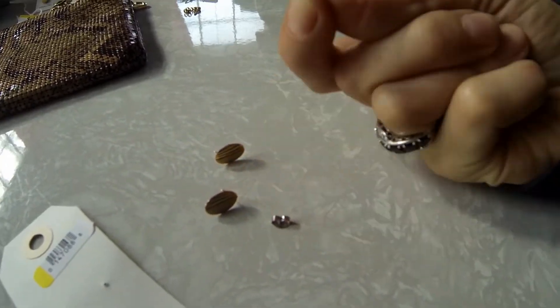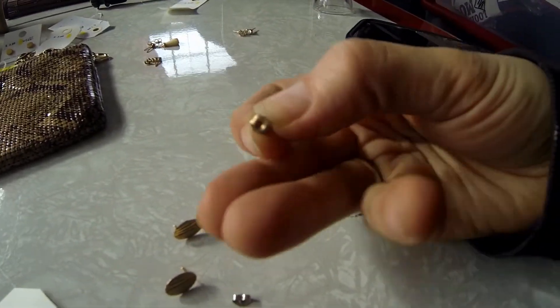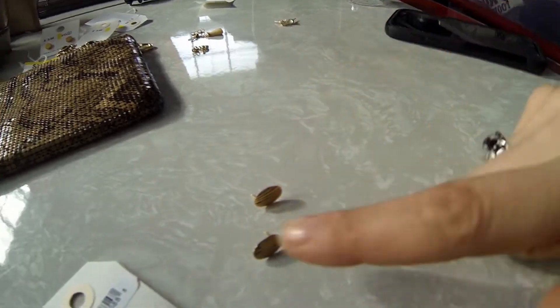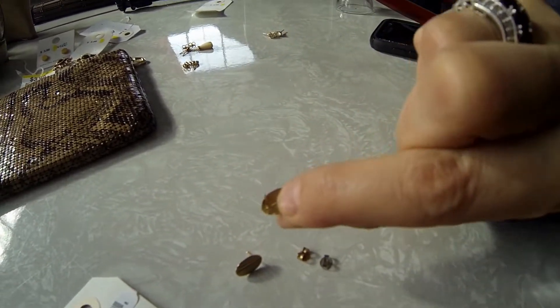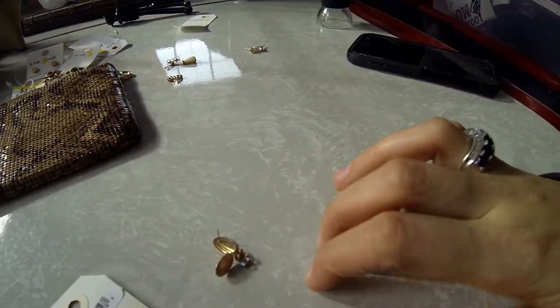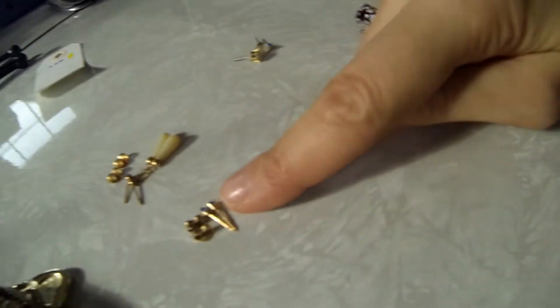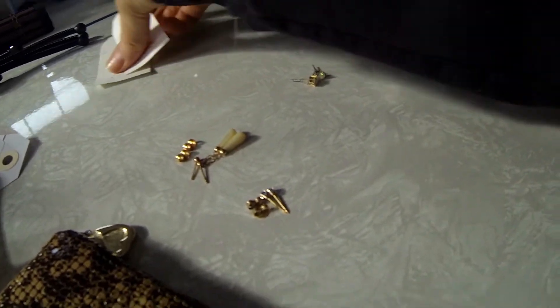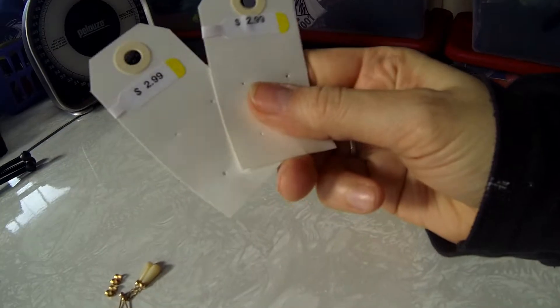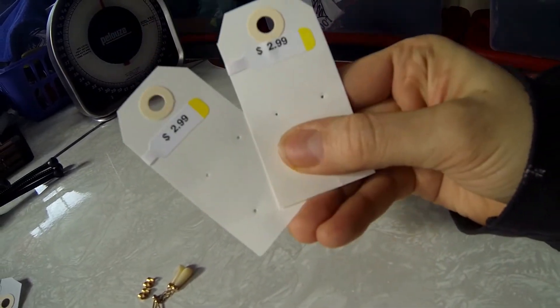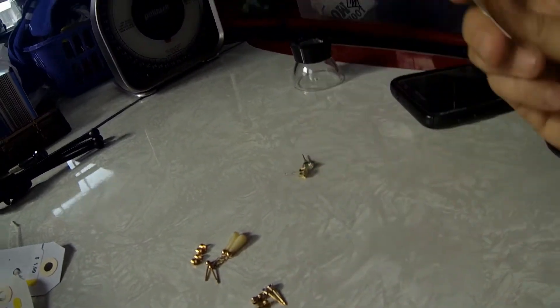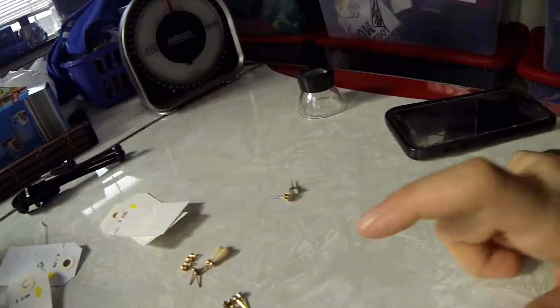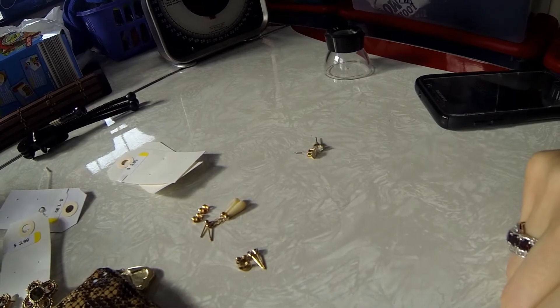And this one back looks like whatever plating was on it is wearing off. So I don't believe this to be real gold. But I think I'm going to keep them just in case because it was with these pieces that were marked 14 karat gold. So for these little earring sets I paid a total of $1.50, $1.50. So I paid $3 and found 14 karat gold. You never know what you're going to find. Always keep a look out. And I'm just really happy about that.